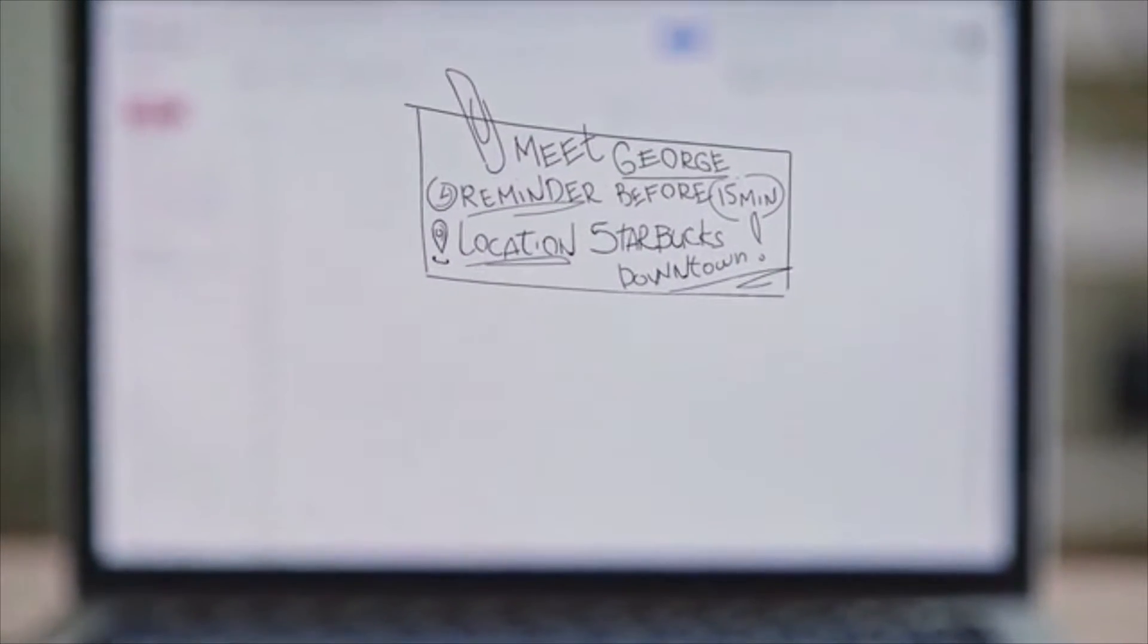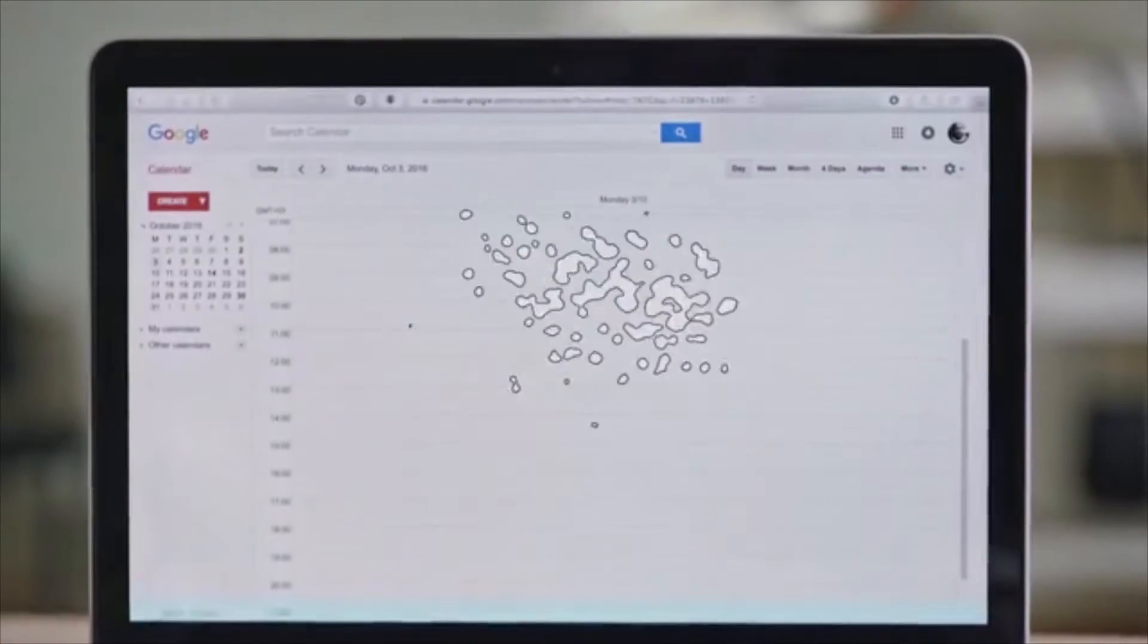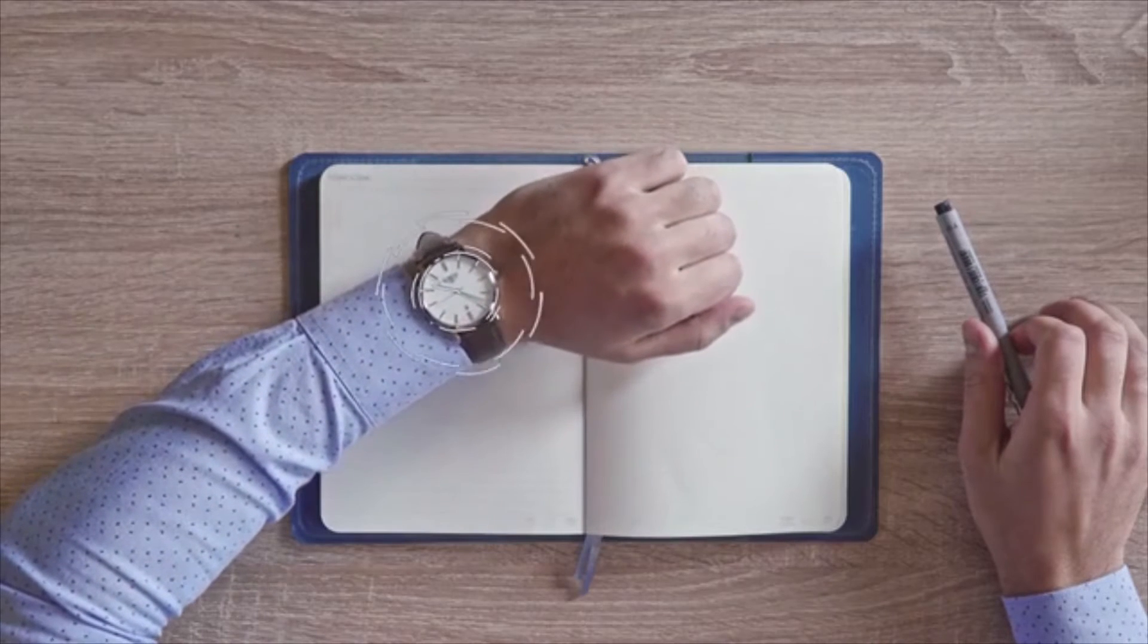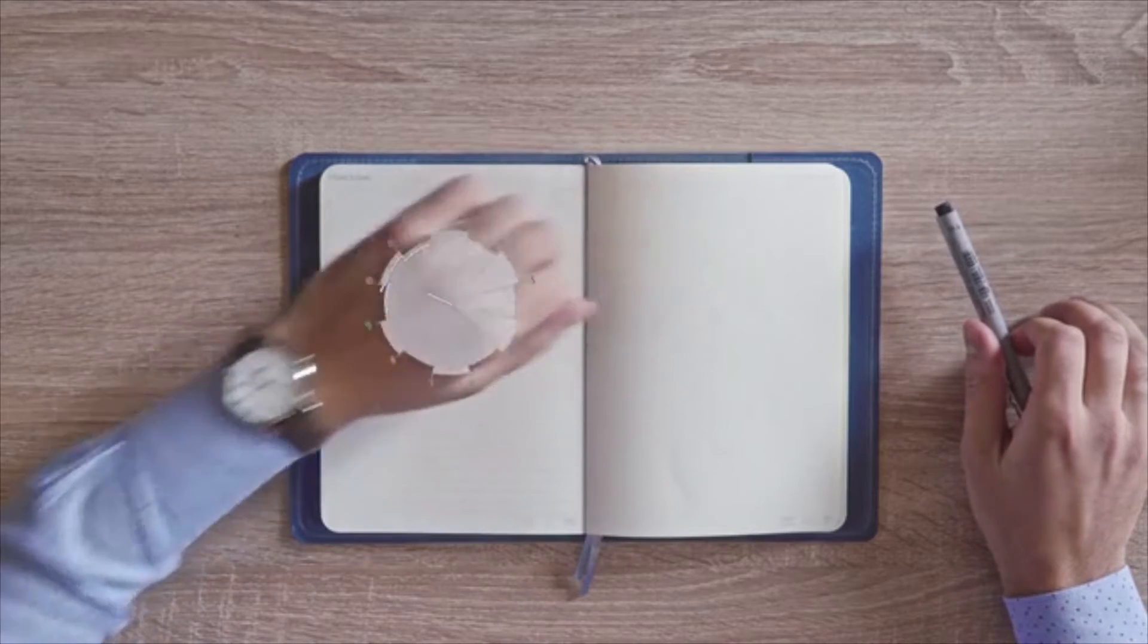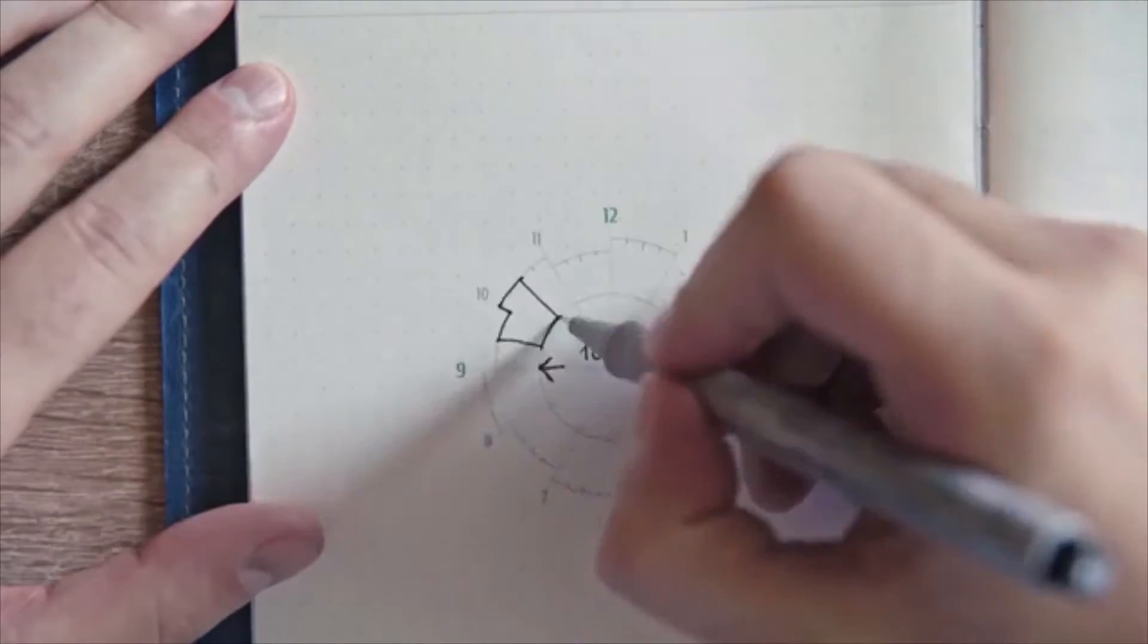While searching for the best visual way to plan, we chose the circular diagram because it looks like a clock face and it takes less effort to focus on what's going to happen and when it's going to happen.